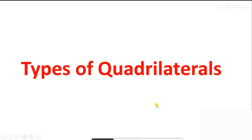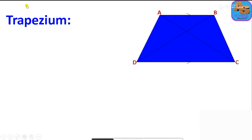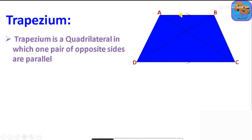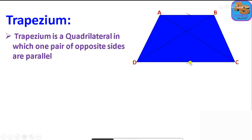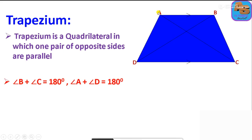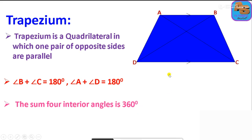The first type is trapezium. A trapezium is a quadrilateral in which one pair of opposite sides are parallel. Here AB and DC are parallel, and AD-BC is a transversal. The sum of the interior co-interior angles: angle B plus angle C equals 180 degrees, and angle A plus angle D equals 180 degrees. The sum of the four interior angles is 360 degrees.